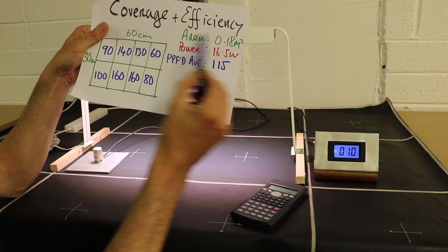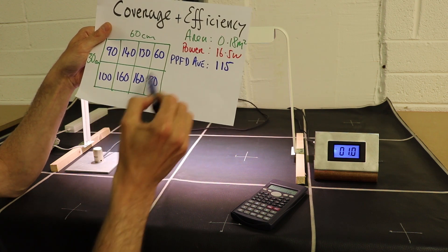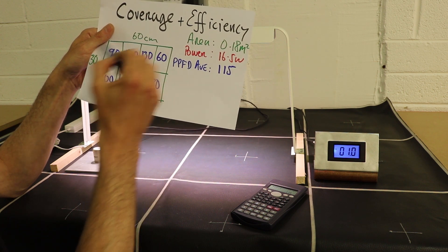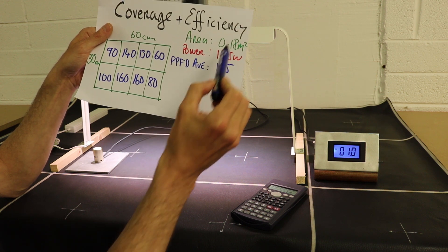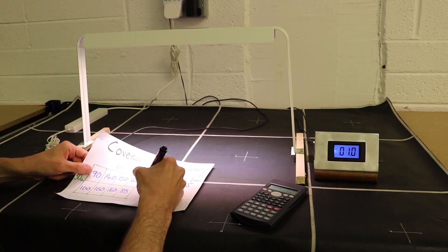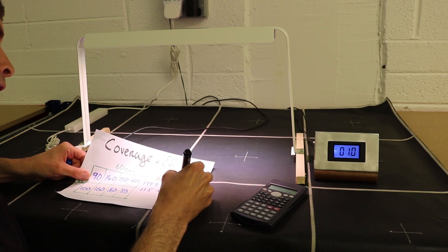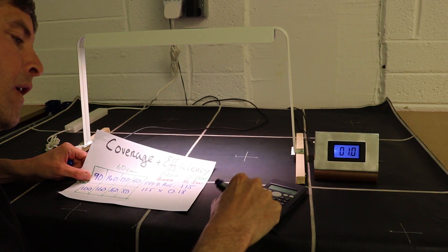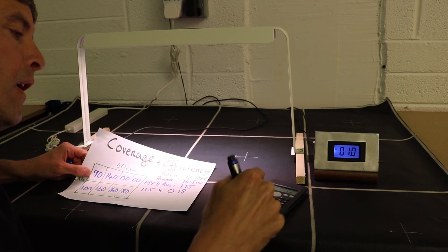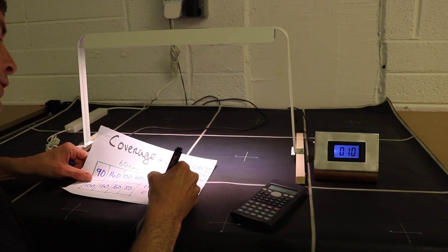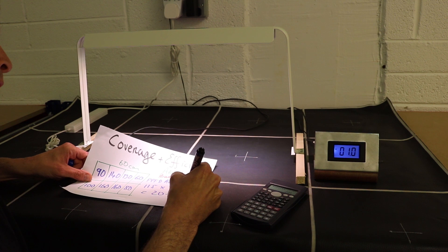Now to get the total PPFD output, that's the average per square over the area. So we multiply 115 by 0.18 and that equals 20.7 PPFD.